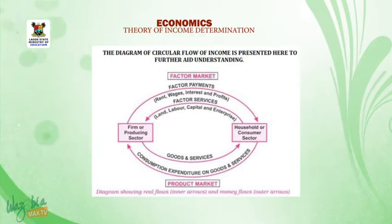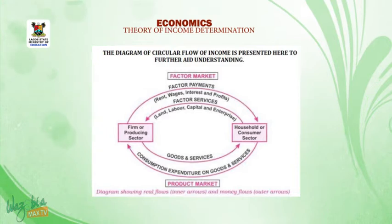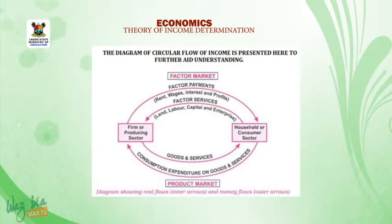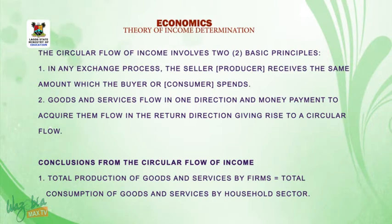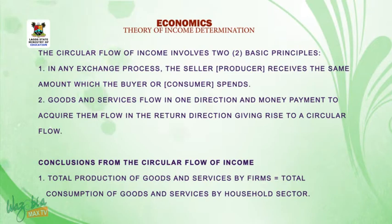There are two sectors indicated: households and firms, as well as the flow of resources, income, goods and services. The circular flow of income involves two basic principles. First, in any exchange process, the seller or producer receives the same amount which the buyer or consumer spends.